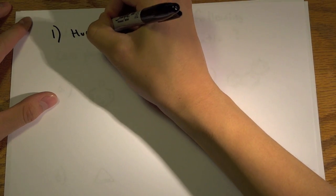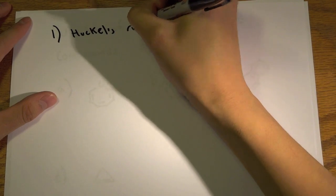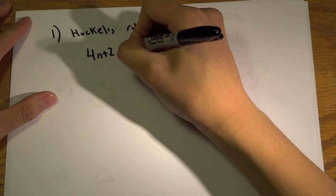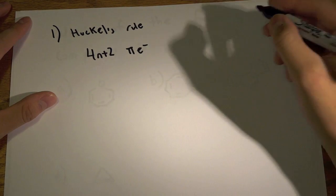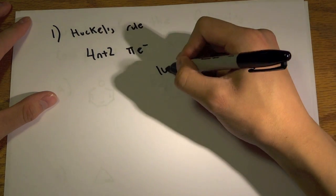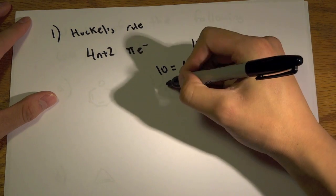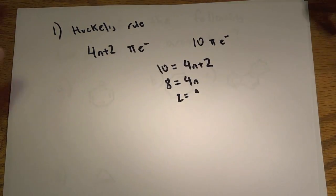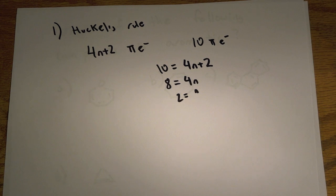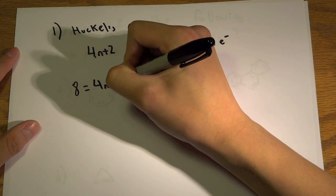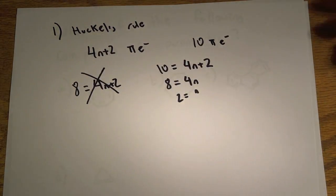The first one is Hückel's rule. This one says that you have to have 4n plus 2 pi electrons. So say we had 10 pi electrons: 10 equals 4n plus 2, so 8 equals 4n, and n equals 2. So n has to be an integer. If it doesn't come out to an integer, then it doesn't follow Hückel's rule and it's not aromatic. So if we had 8 pi electrons, that would not work because n would have to be a fraction.